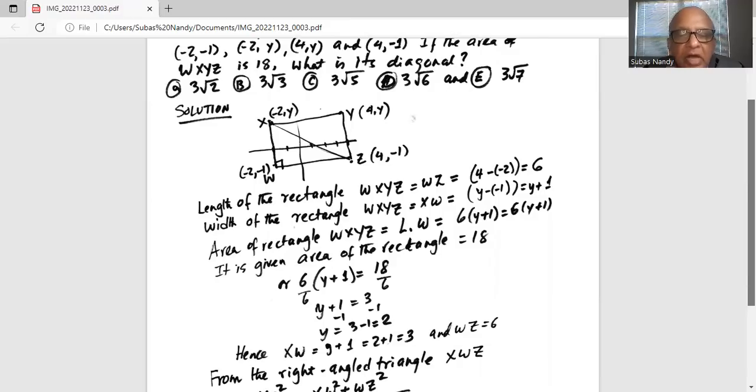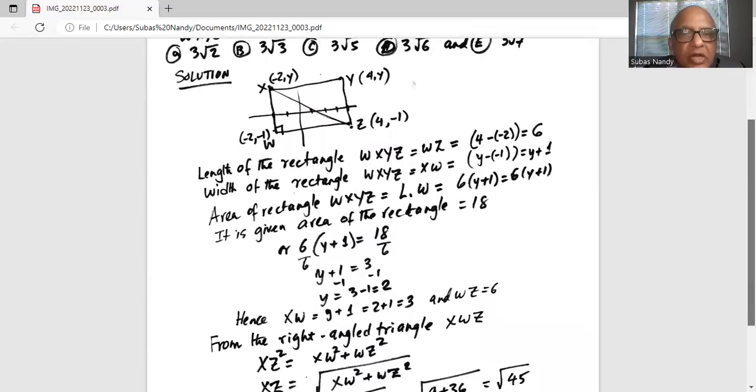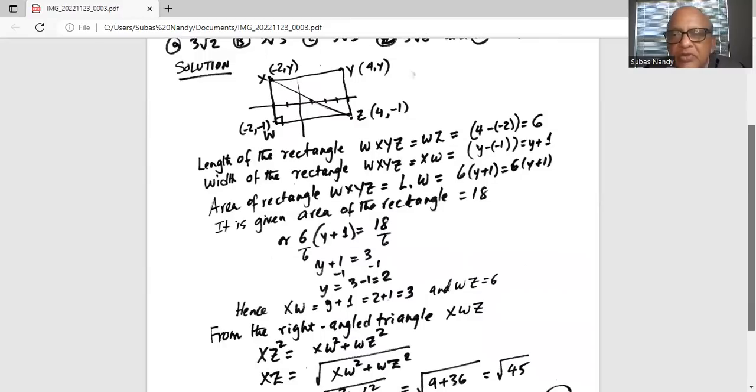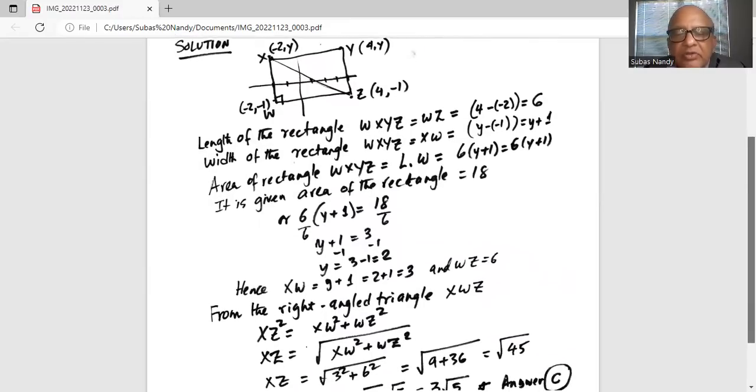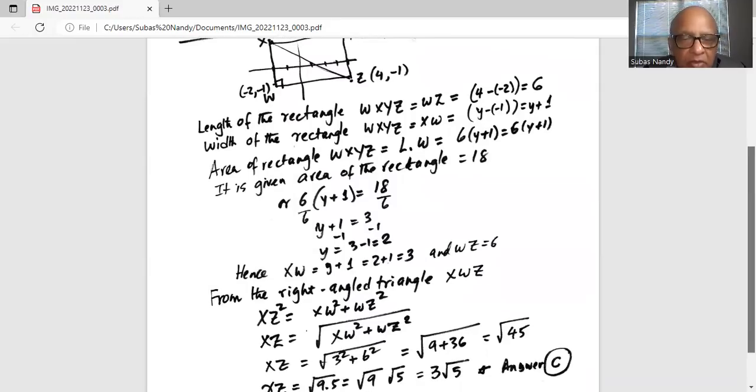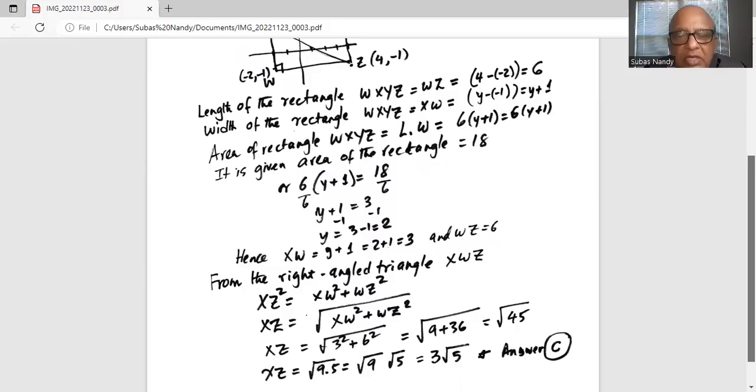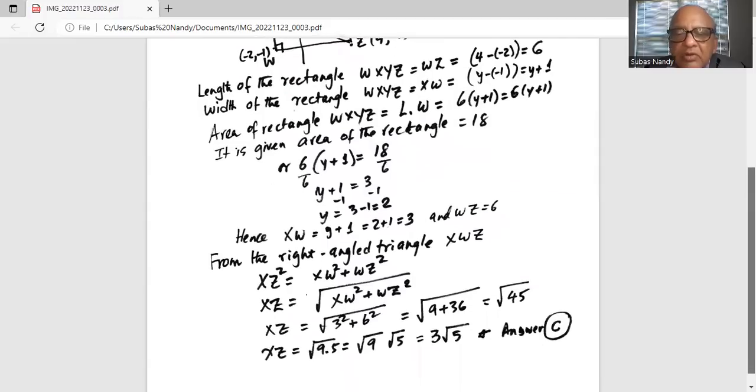So in right angle triangle XWZ, XZ² equals XW² plus WZ². We are using the Pythagorean theorem. So XZ is the square root of XW² plus WZ², which is the square root of 3² plus 6², which equals the square root of 9 plus 36, which is 45. So it is the square root of 45.